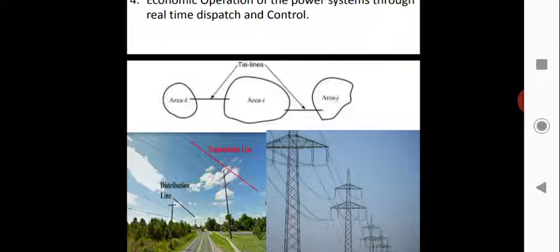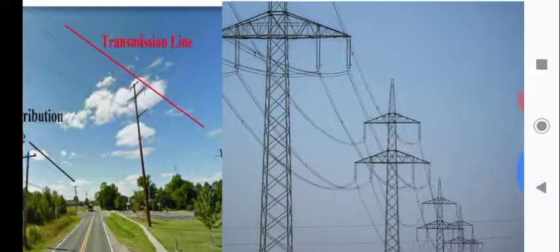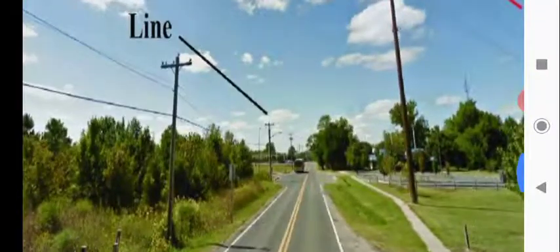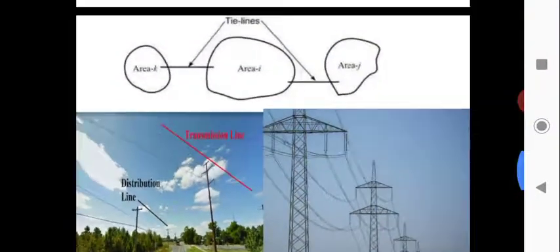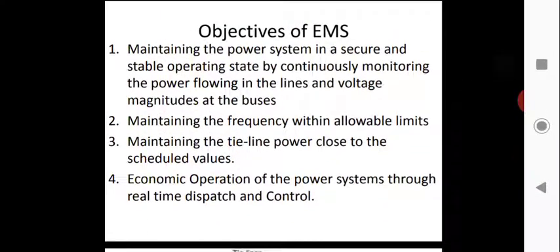We have two types of lines: the transmission line shown in red color, and the distribution line shown in black color. The tie-line connects different areas. We need to maintain the tie-line power flow to the scheduled values. Another objective is the economic operation of the power system through real-time dispatch and control. In real-time dispatch, at any given time there is a particular load dispatch on the main line, including peak load, and we manage baseline generation accordingly.